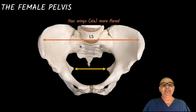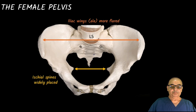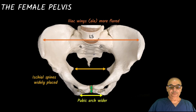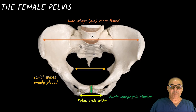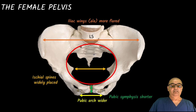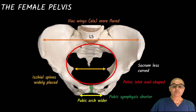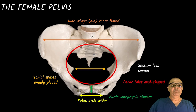The ischial spines are also at a far distance from each other. The pubic arch is more obtuse and wider. If you look at the symphysis pubis, it is shorter than the male version. If you look at the pelvic inlet, it's more ovoid as compared to the male, which is heart-shaped. The sacrum is less curved, while the male sacrum is more curved.